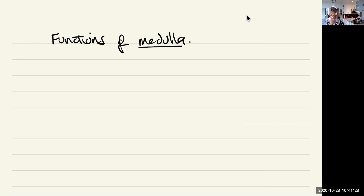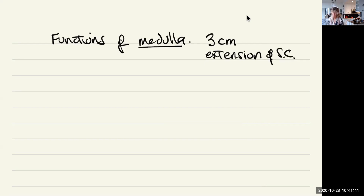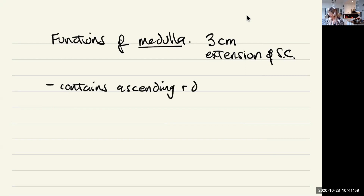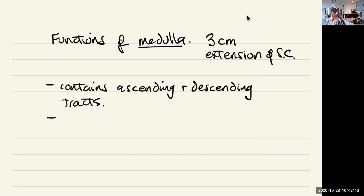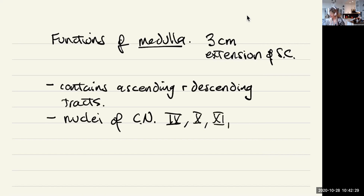The medulla oblongata is about a three-centimeter extension of the spinal cord — just a smallish extension. One of its functions is simply to contain ascending and descending tracts. It also is the origin of some cranial nerves, containing the nuclei of cranial nerves 9, 10, 11, and 12.